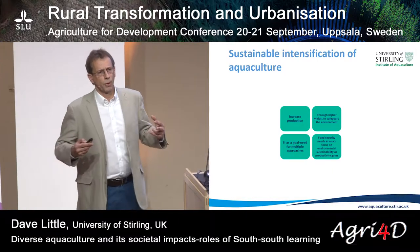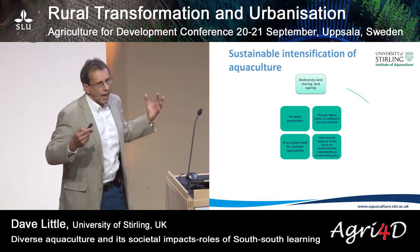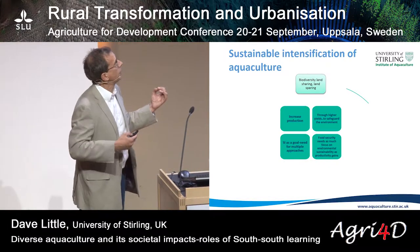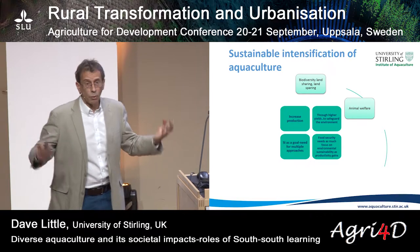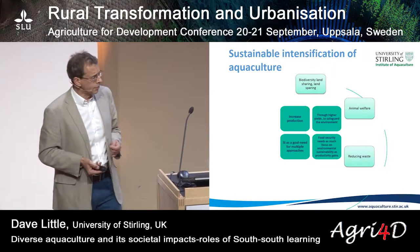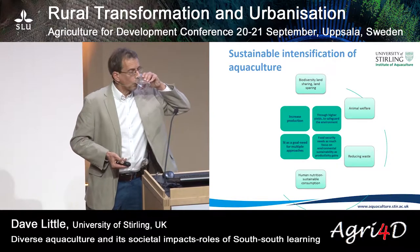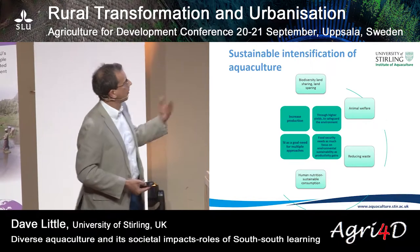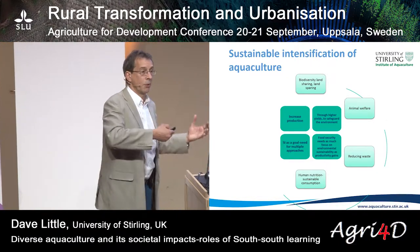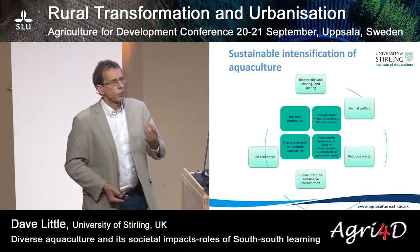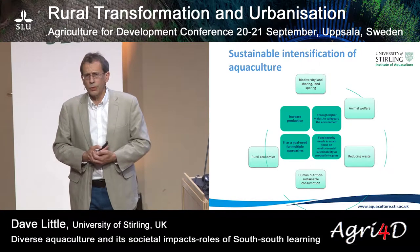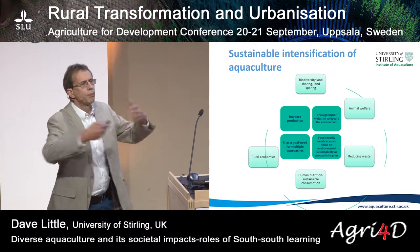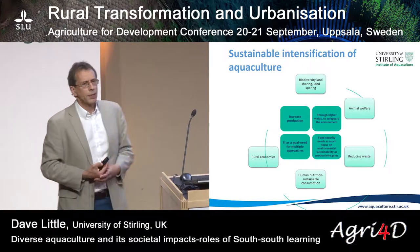We're going to need multiple approaches. When we unpack that, the key things we have to think about are: can we maintain biodiversity through land sharing or land sparing? What about animal welfare — a key consideration. Reducing waste, thinking about production, processing, and consumption waste. What about the nutrition angle, looking at sustainable intensification from the point of view of consumption? What's it doing for rural economies? And then this broader aspect of sustainable development, because the effects of aquaculture do spread worldwide.